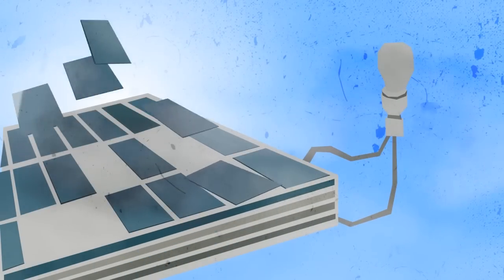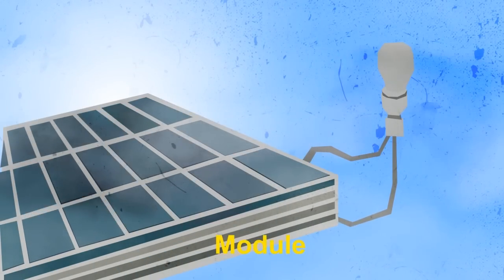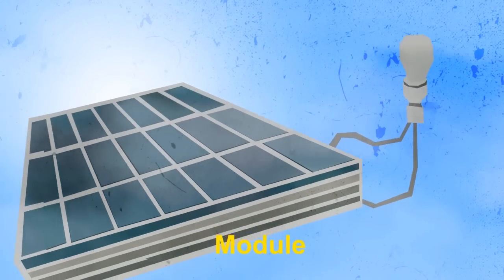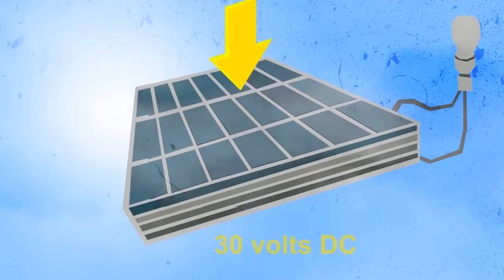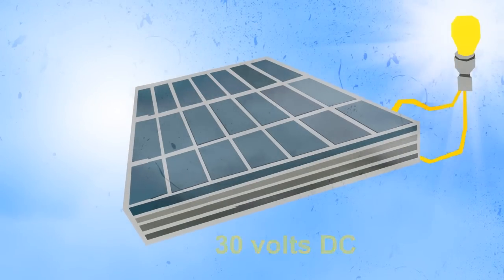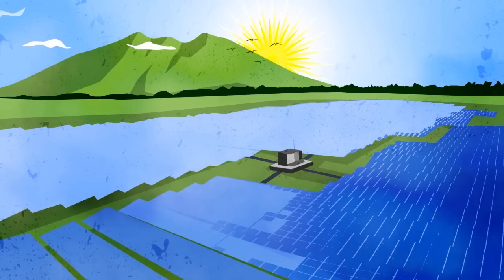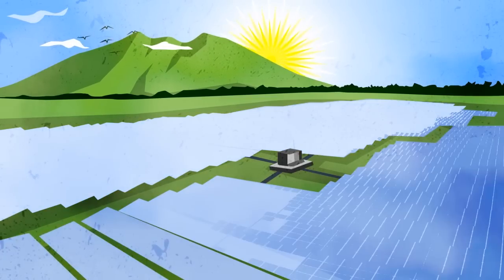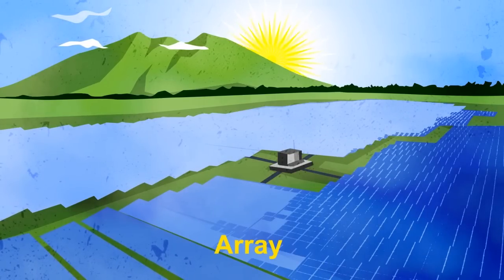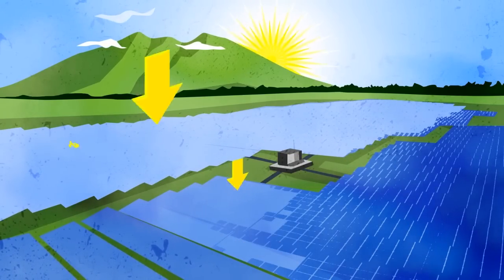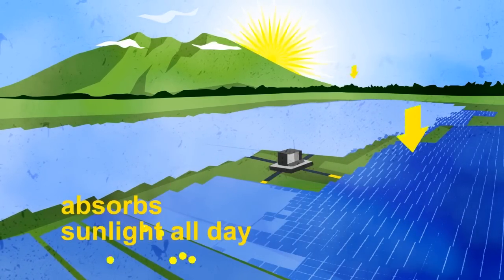A number of solar cells connected to each other and mounted in a frame is called a module. Each module is designed to generate about 30 volts DC. To generate large amounts of electricity, modules are grouped together to form an array. These are scattered throughout an open field to capture as much solar power as possible.